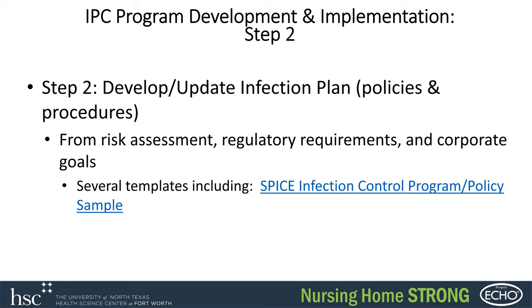So after completing your risk assessment and scoring all those components, the next step is developing or updating your infection prevention plan in terms of policies and procedures for all of those components. You want to make sure you have policies and procedures in place for all components in the risk assessment that are part of the bigger program. Based on the score, that's what you'll focus on — you want policies and plans that really cover all aspects of your risk assessment.